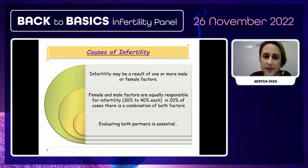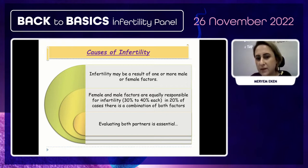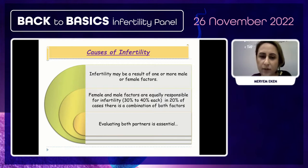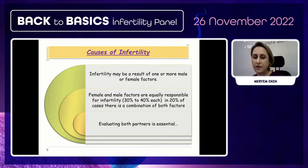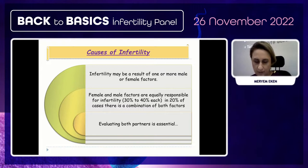Infertility may be a result of one or more male or female factors. Female and male factors are equally responsible for infertility, and in 20% of cases there is a combination of both factors. Evaluating both partners is essential.